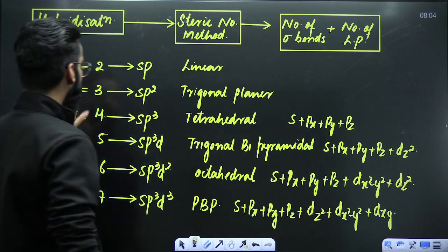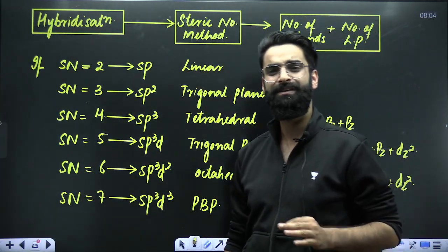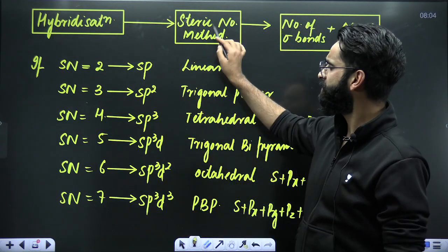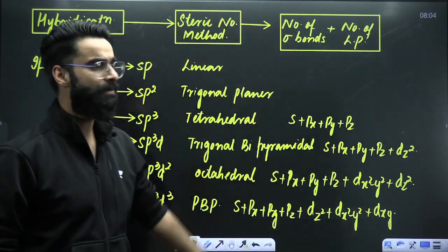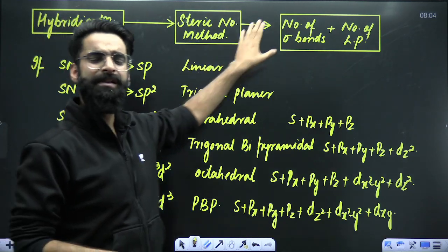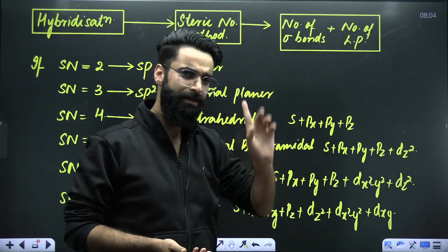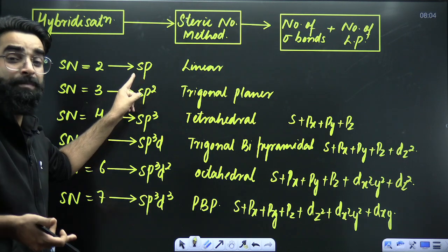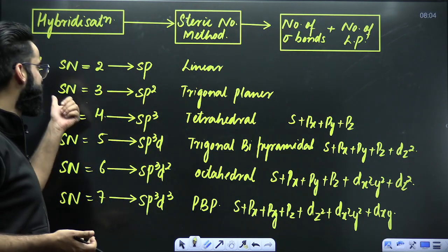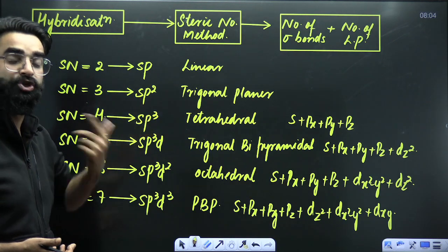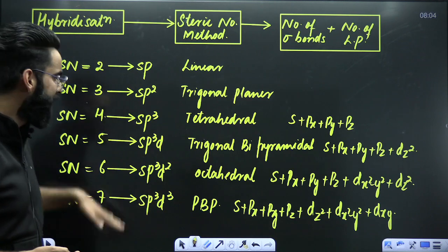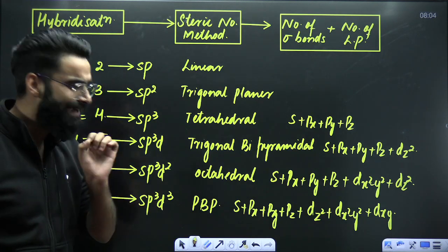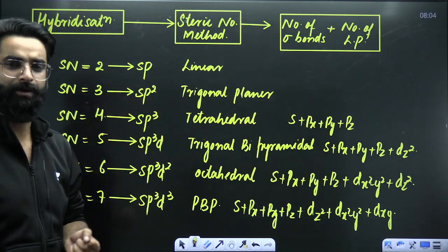Point number 2: questions are frequently asked related to hybridization and geometry. In order to calculate hybridization, we use one simple method called the steric number method. Steric number is defined as the number of sigma bonds plus the number of lone pairs. If the steric number is 2, hybridization is sp and geometry is linear. If the steric number is 3, hybridization is sp2 and geometry is trigonal planar. Let's see exactly how this concept is applied.